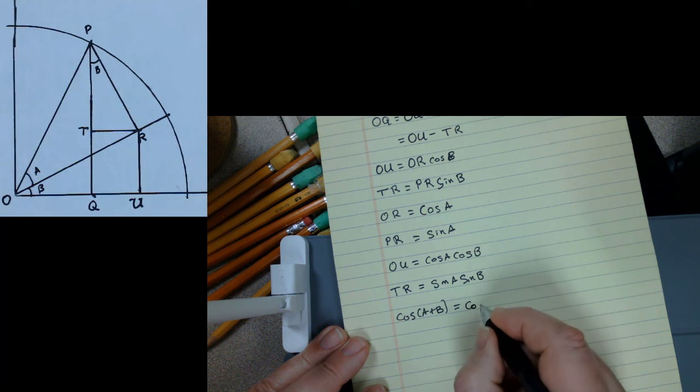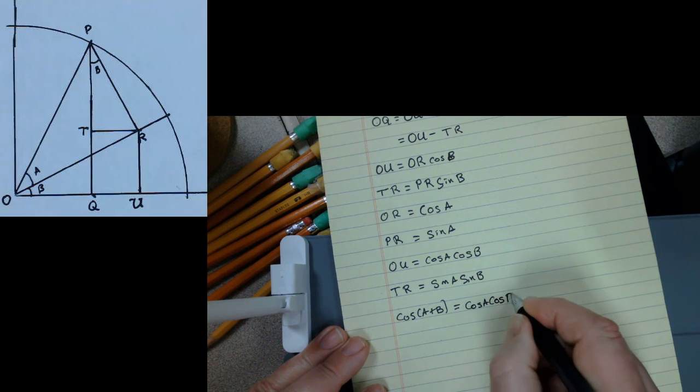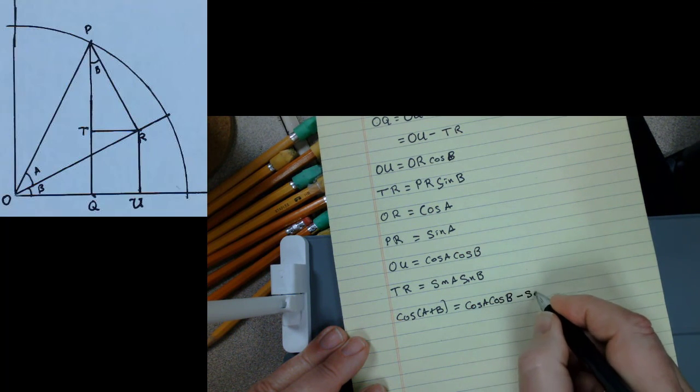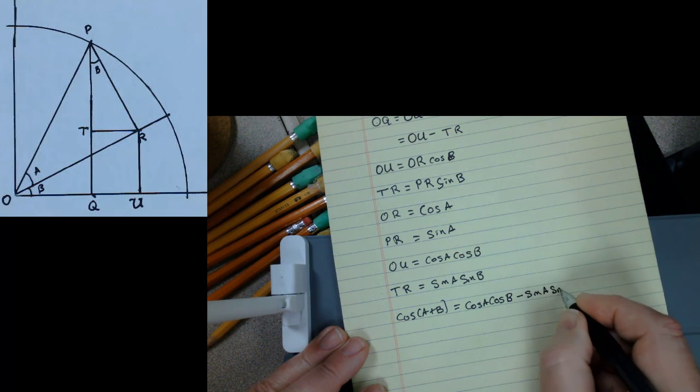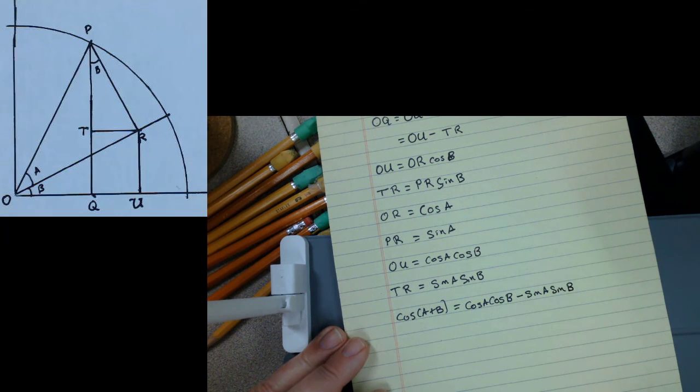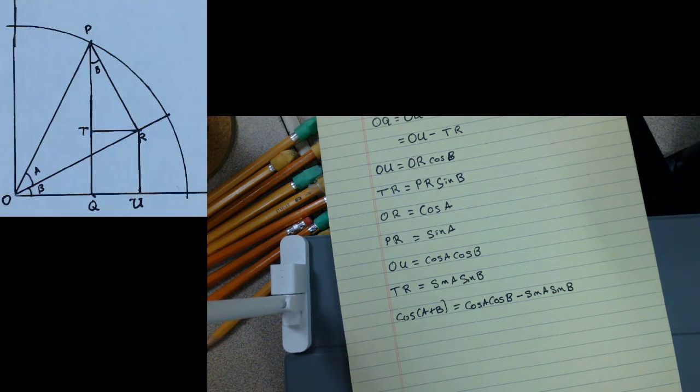will be equal to the cosine of A cosine of B minus sine of A sine of B. And it all comes from just a nicely put together diagram.